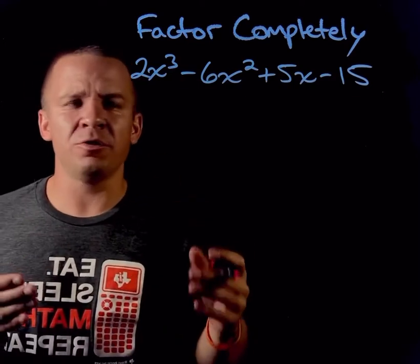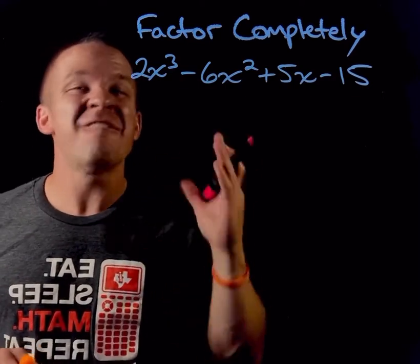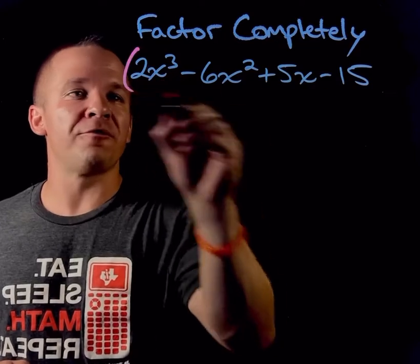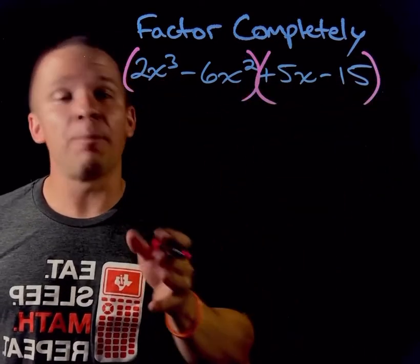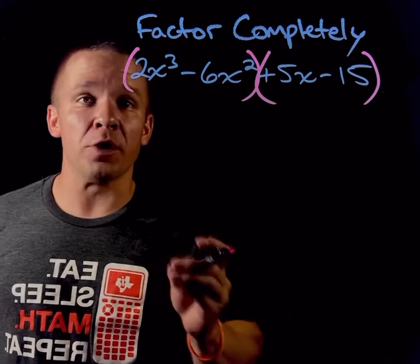This is four terms here. So how am I going to do that? Well, with four terms, we're going to use what's called factor by grouping. So I'm going to group my first two terms and my last two terms. Then I'm going to look for a GCF in each one of those groups.